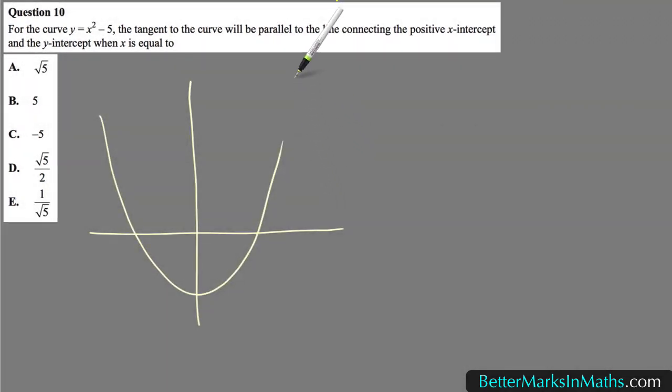And then it says the tangent to the curve will be parallel to the line connecting the positive x-intercept, so that's here, and the y-intercept, which is here.